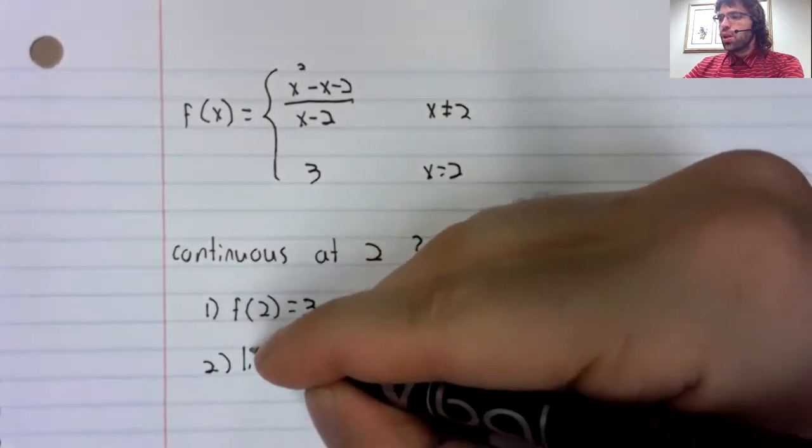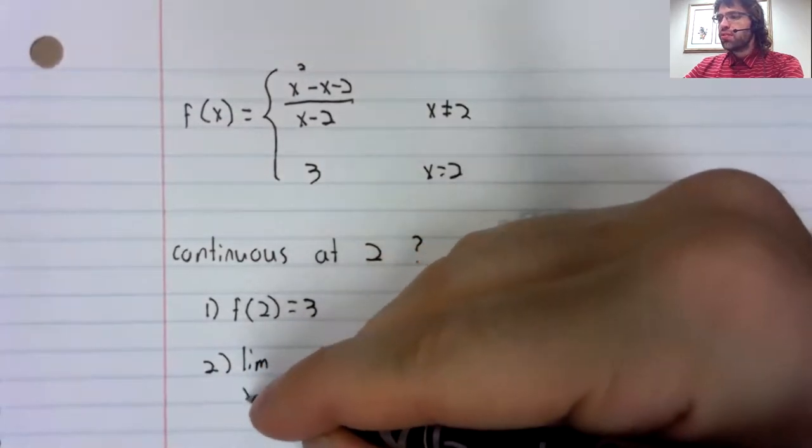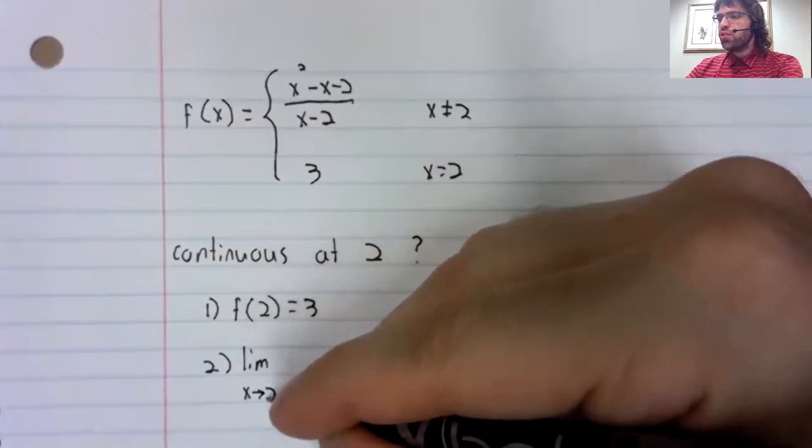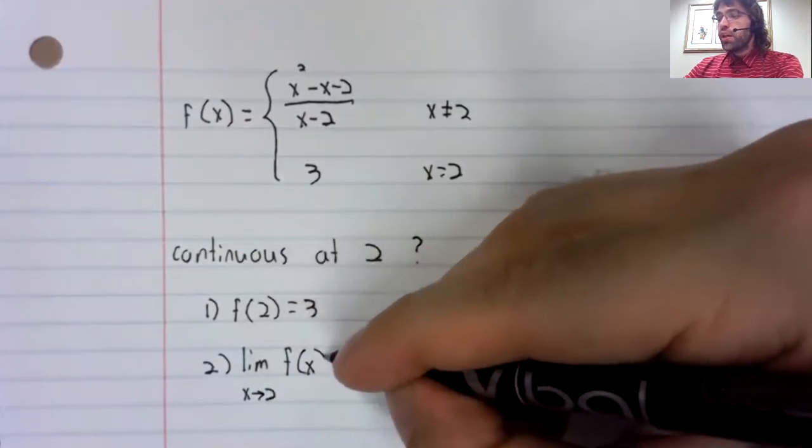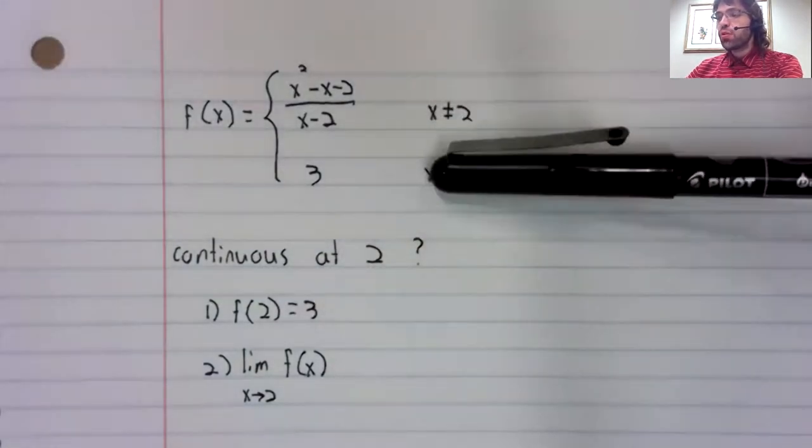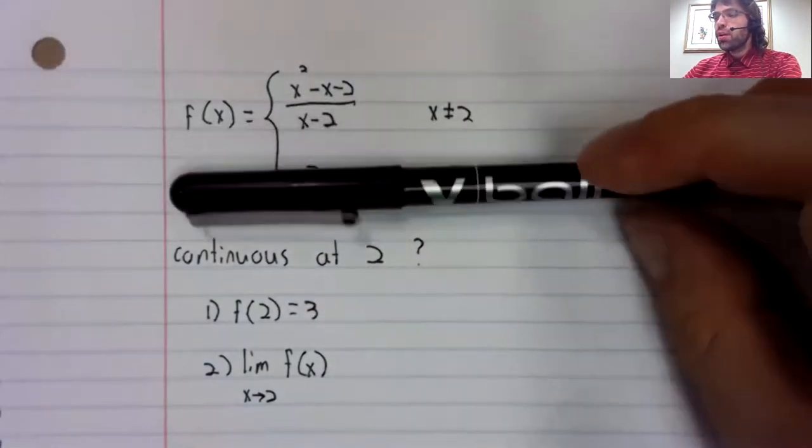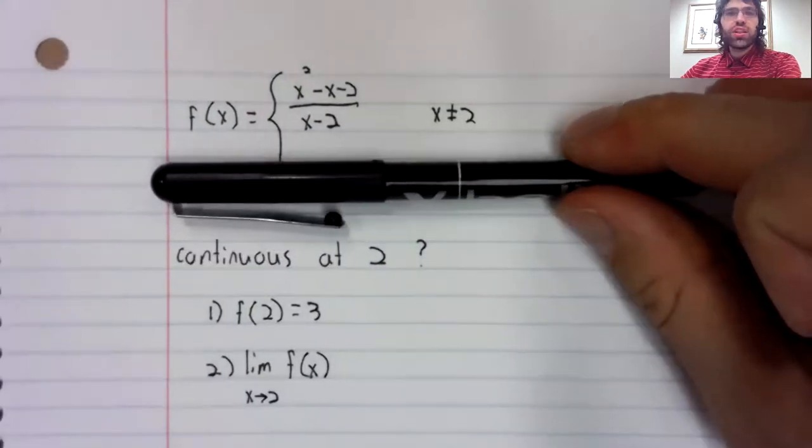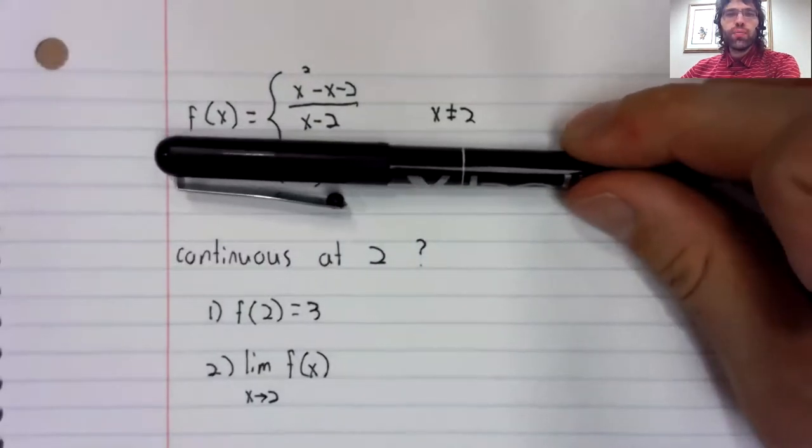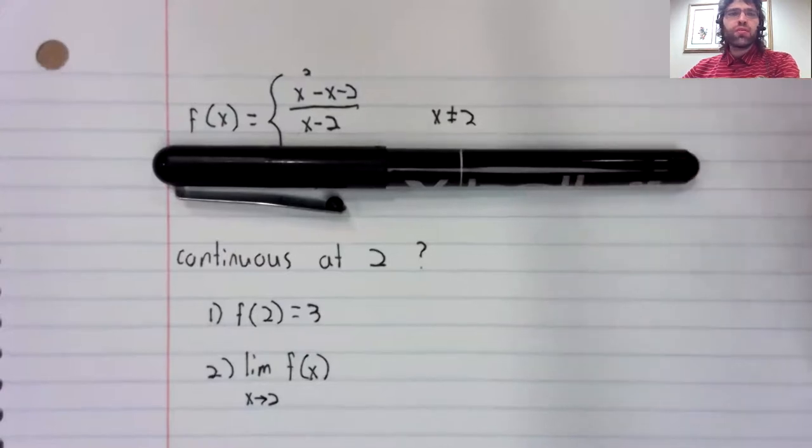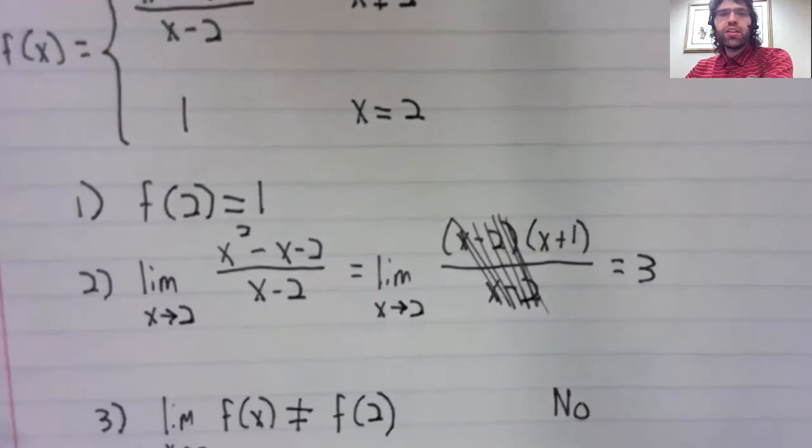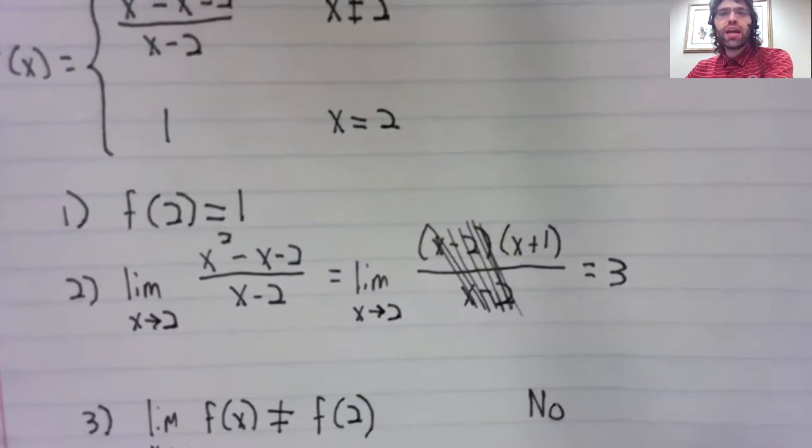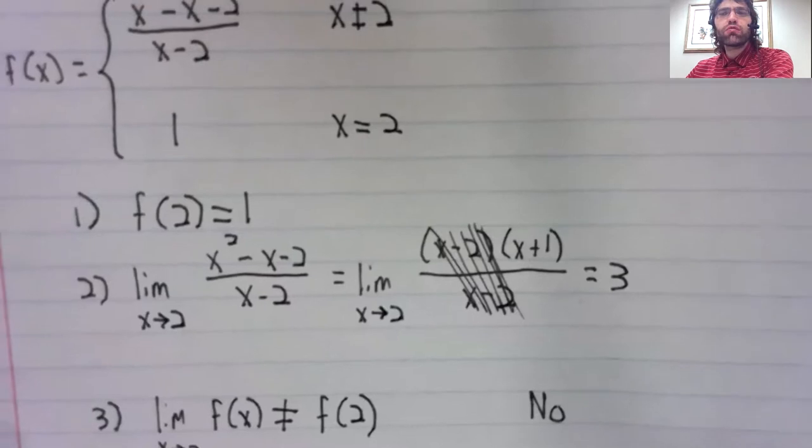The limit as x approaches two still exists. Remember, as x approaches two, x doesn't equal two. We're taking the limit of this rational function. And we already did the work. That limit is three.